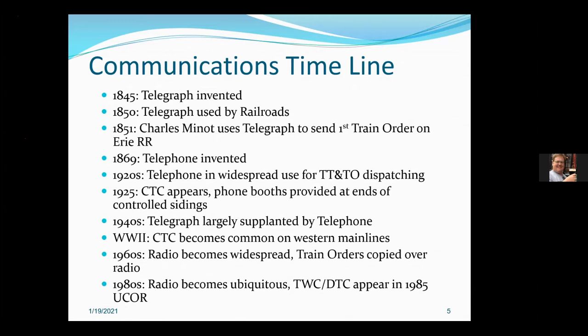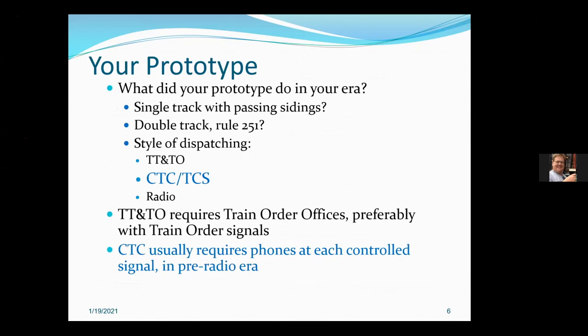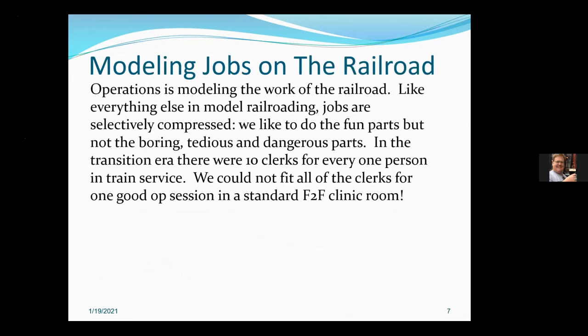All that said, we may want to do different things on model railroads. The questions you probably want to ask are: what did your prototype do in the era? Most of us are interested in CTC or TCS — which is the Union Switch and Signal product name; CTC was actually GRS's. We talked about phone booths. The question then is: what jobs do we want to model? Operations is really modeling the work of the railroad, and we're going to compress those and pick and choose.